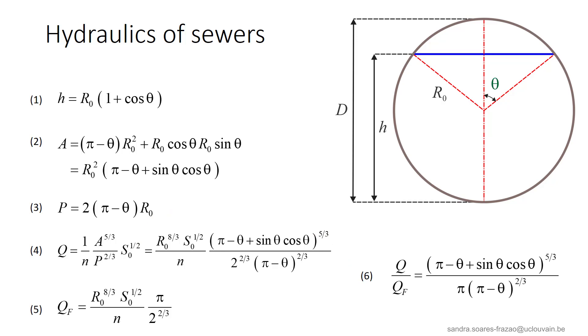There is one particular case that can be identified. When theta is just equal to 0, the pipe is full, but the flow is not yet a pressurized flow. The pressure at the top of the pipe is still the atmospheric pressure. The discharge, written in equation 5 here, is called the pipe full discharge and it is denoted Qf.